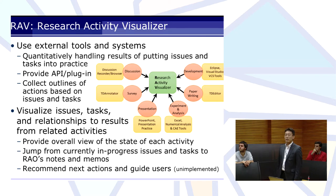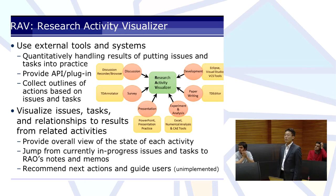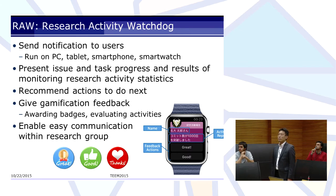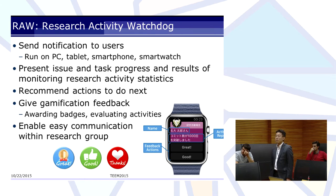RAV can visualize issues, tasks, and relationships resulting from related activities. RAV provides an overall view of the state of each activity within the overall research effort. It is also possible to jump from currently in-progress issues and tasks to notes and memos. RAV is a tool that runs on PC, tablet, smartphone, or smartwatch, sending notifications to users. A watchdog can present issue and task progress and results of monitoring research activity statistics. RAV also gives gamification feedback such as awarding badges and evaluating activities, and can be used for easy communication with the research group.